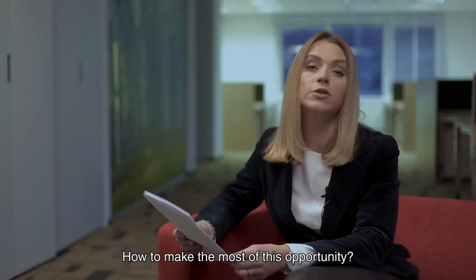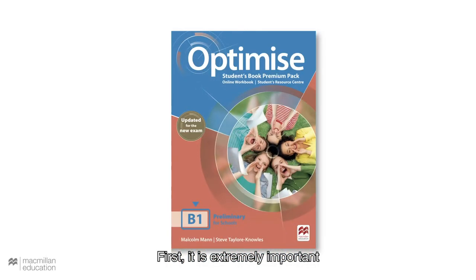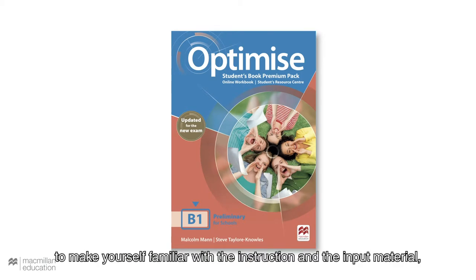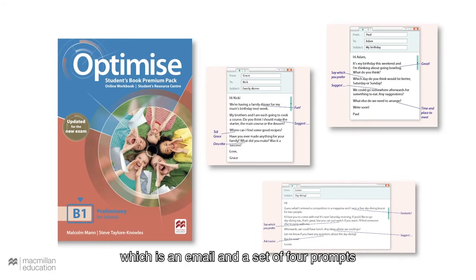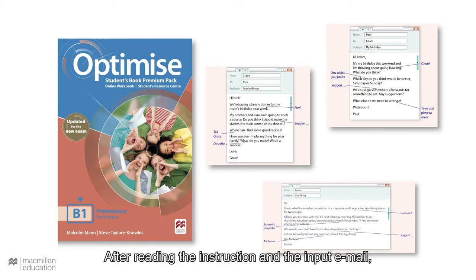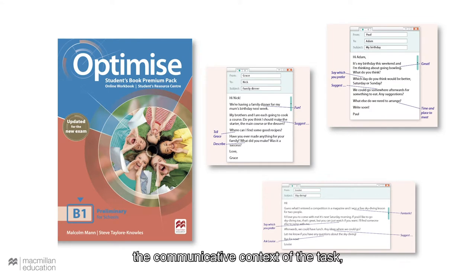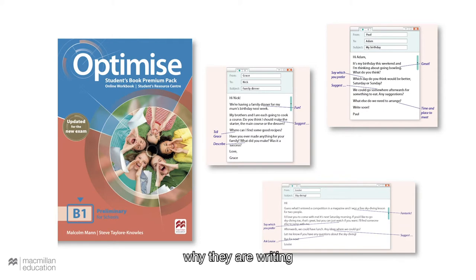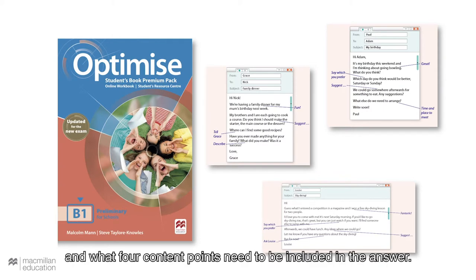How to make the most of this opportunity? First, it is extremely important to make yourself familiar with the instruction and the input material, which is an email and a set of four prompts presented as notes linked to appropriate parts of the input material. After reading the instruction and the input email, the candidate should be able to state the communicative context of the task — that is, who they are writing to, why they are writing, and what full content points need to be included in the answer.